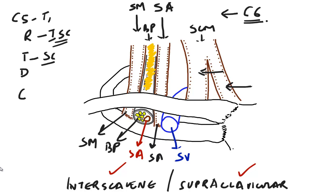At the interscalene area, the brachial plexus is blocked between the two scalenus muscles in the interscalene groove. At the supraclavicular area, the brachial plexus is blocked above the clavicle, just lateral to the pulsations of the subclavian artery.